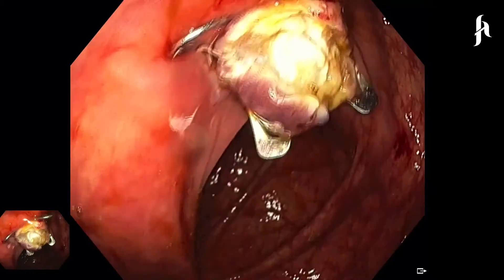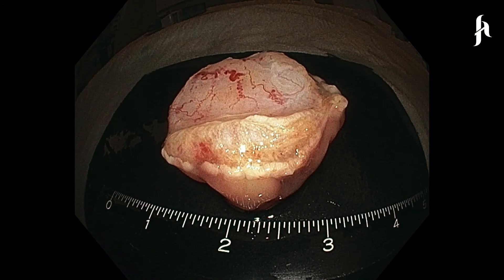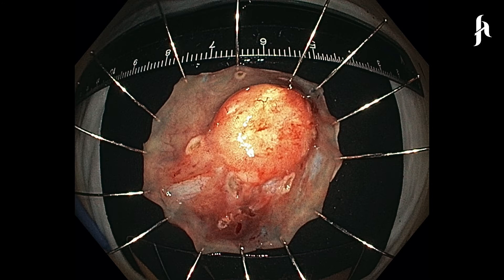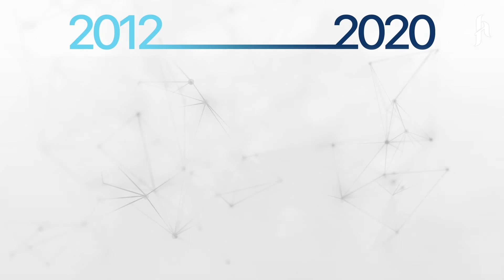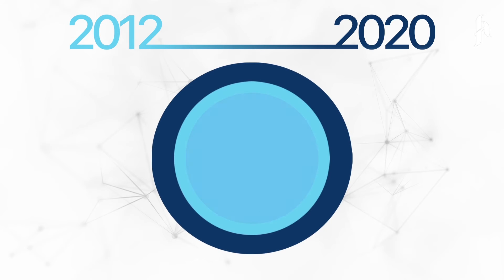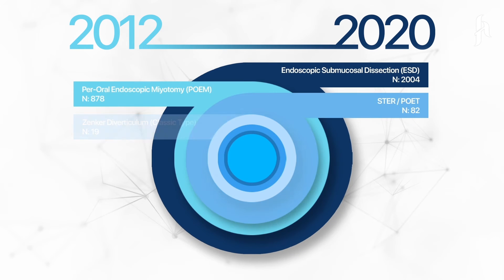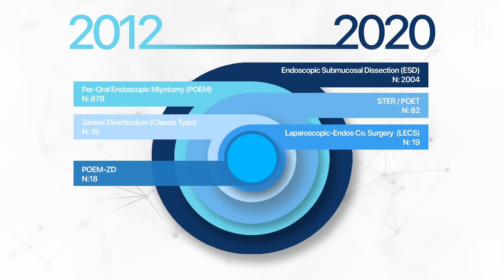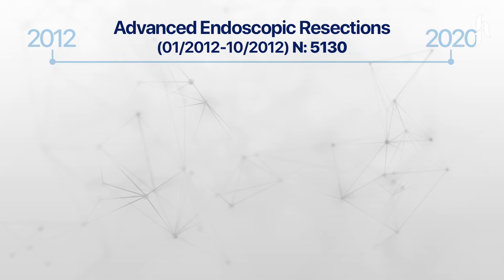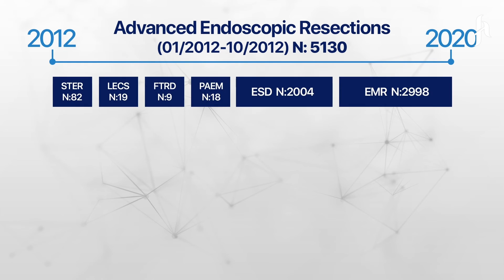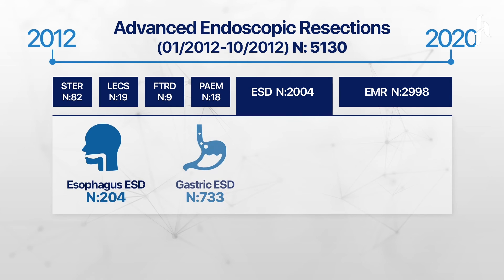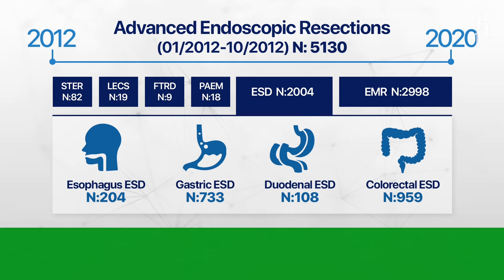As you can see, the endoscopic resection method changes depending on the size, shape, and character of the polyp. As of the date of this video, our center has completed more than 2,000 endoscopic submucosal dissection and more than 3,000 endoscopic mucosal resection procedures. With methods both chosen by the entire world and developed by us, our center is successfully working for the treatment of polyps.